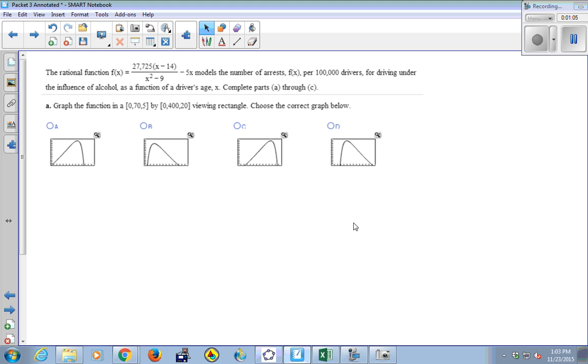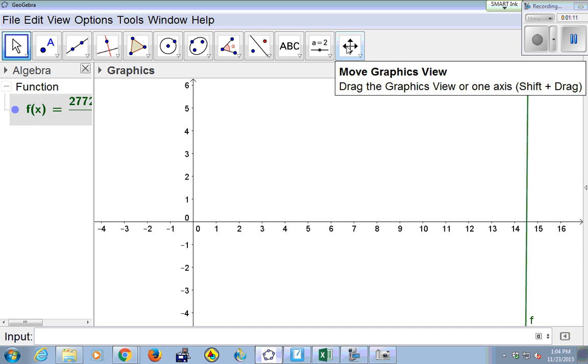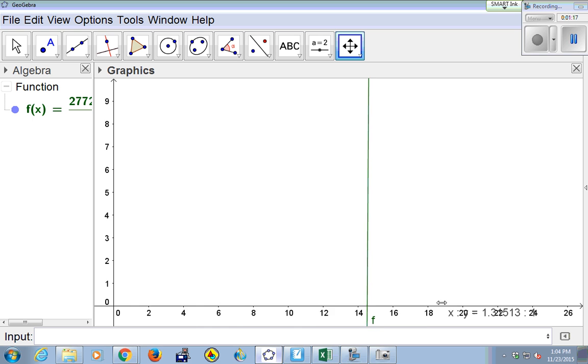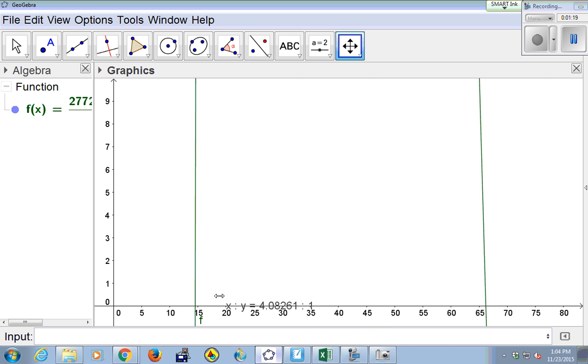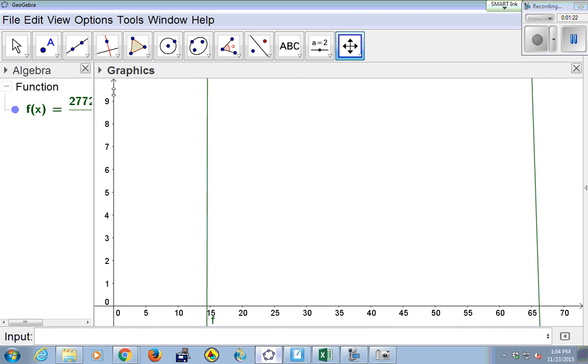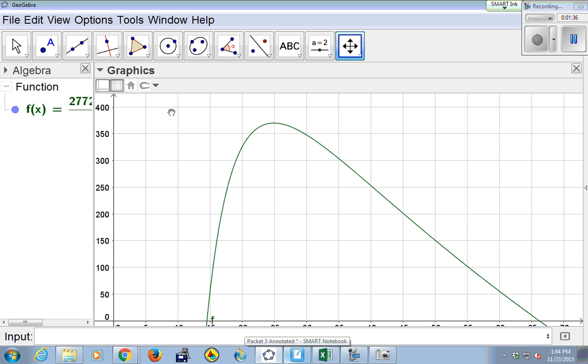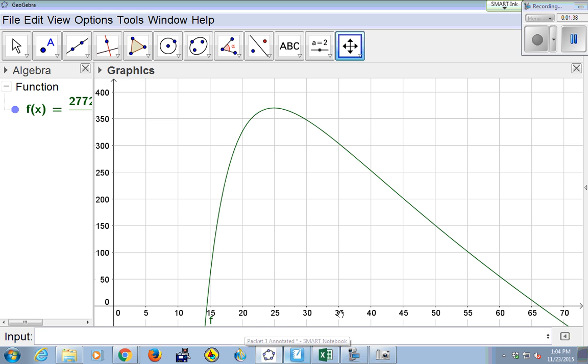And then we have to use a window. They told us to look from 0 to 70 for x and 0 to 400 for y. So I need x to go to 70, so I'm just going to drag my axis until I can see 70. And then y, I'm going to drag my axis until I can see 400. There we go. So that's going to be my graph. The grid on. So there's my grid.